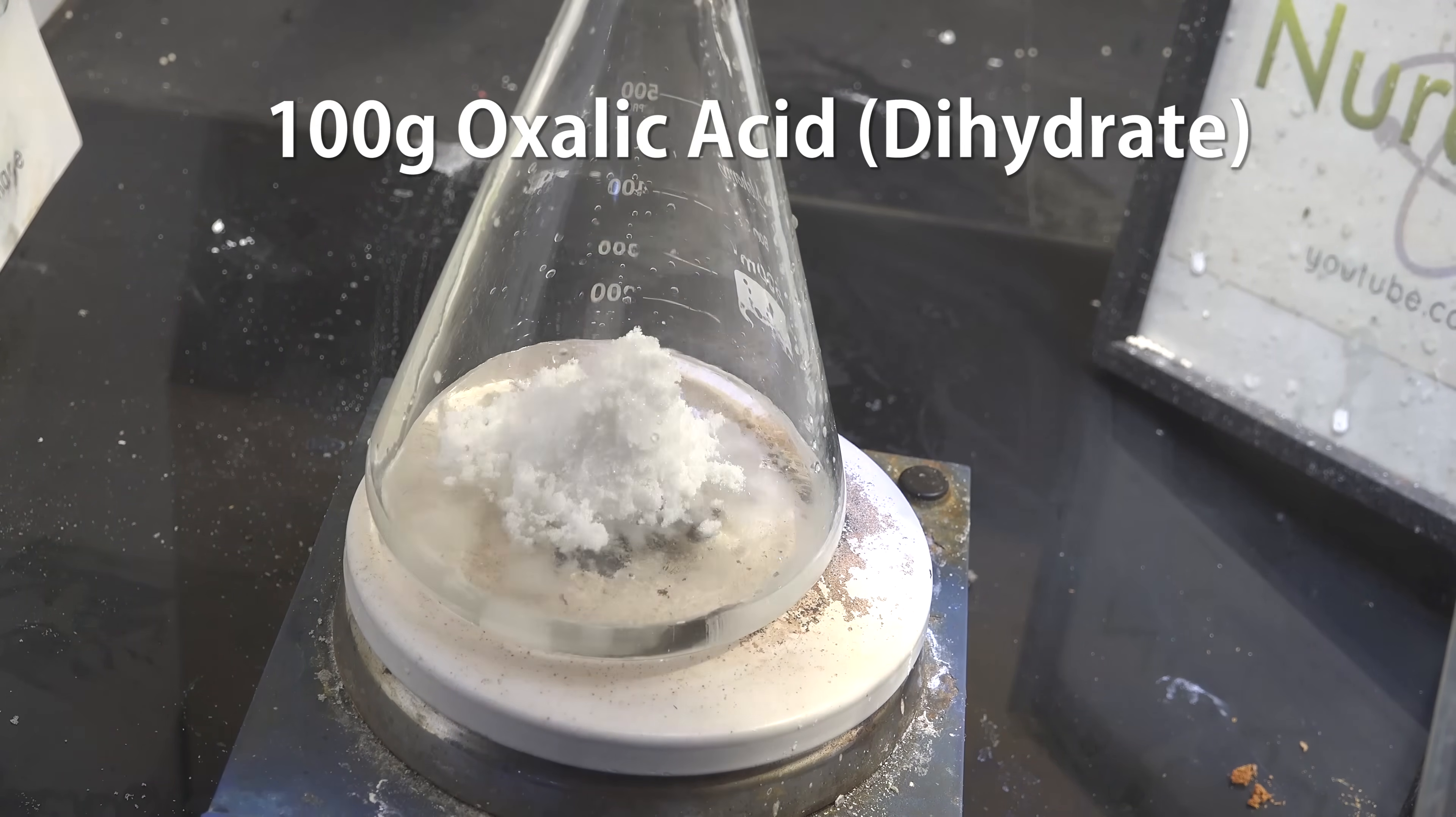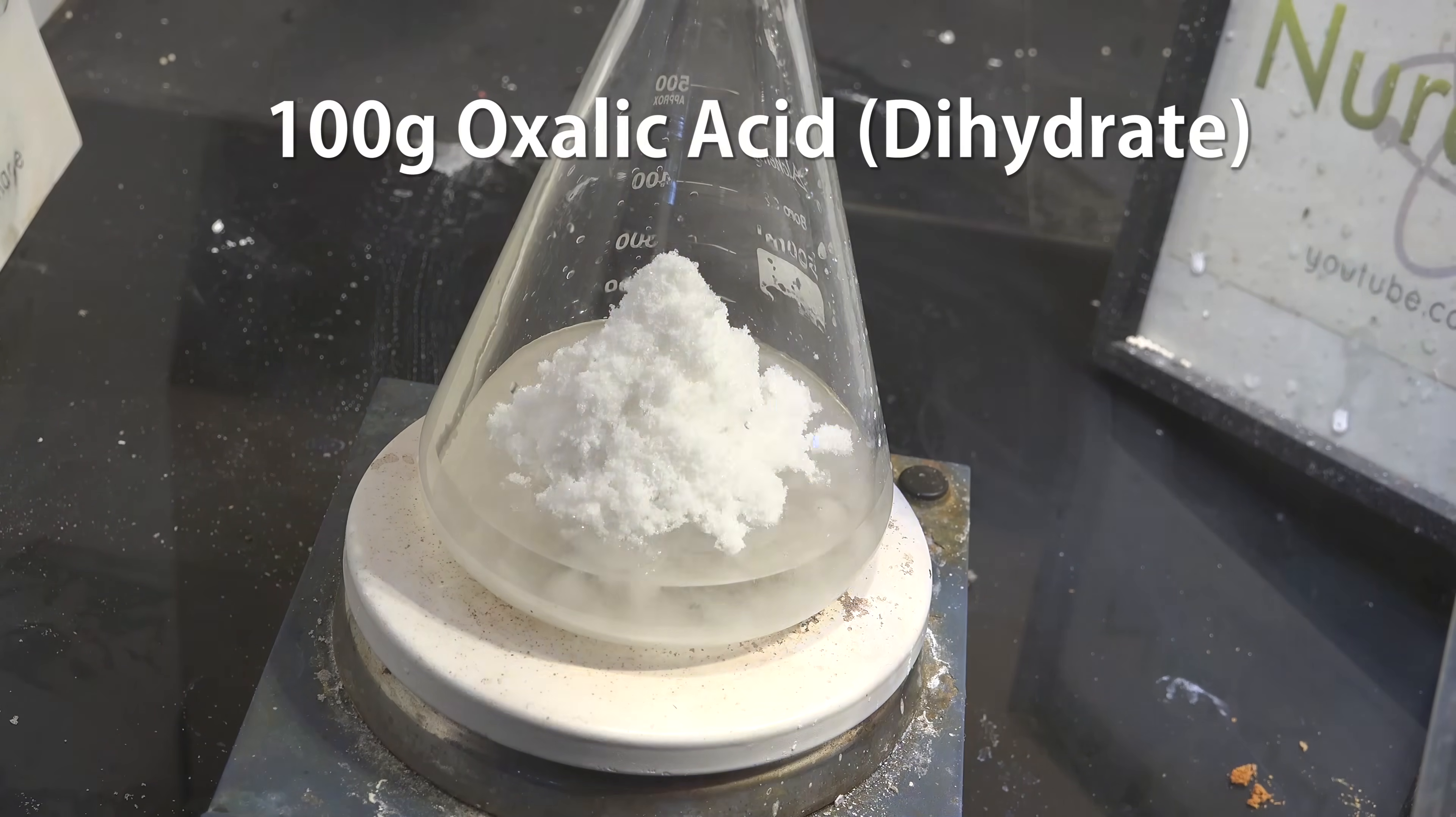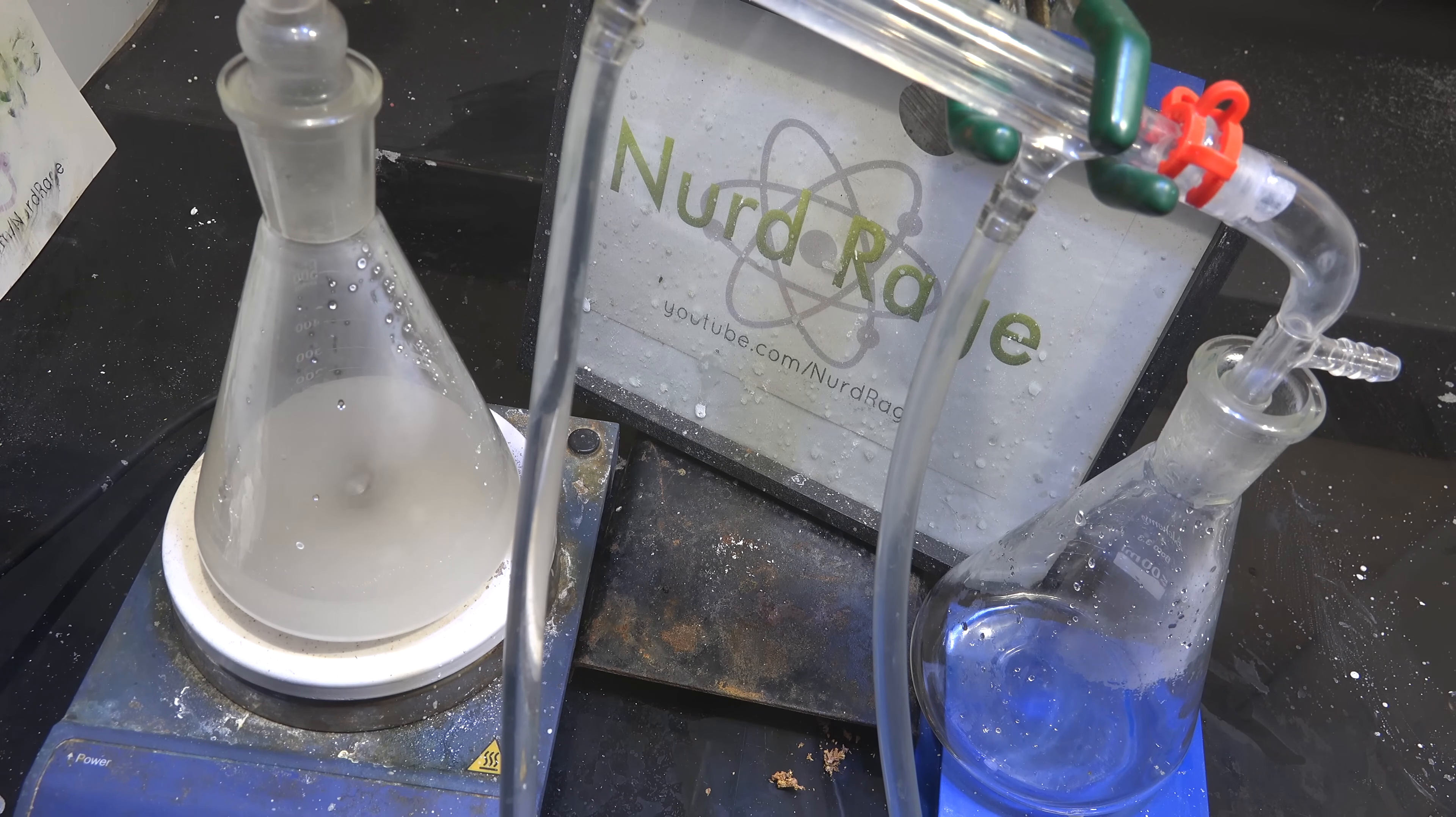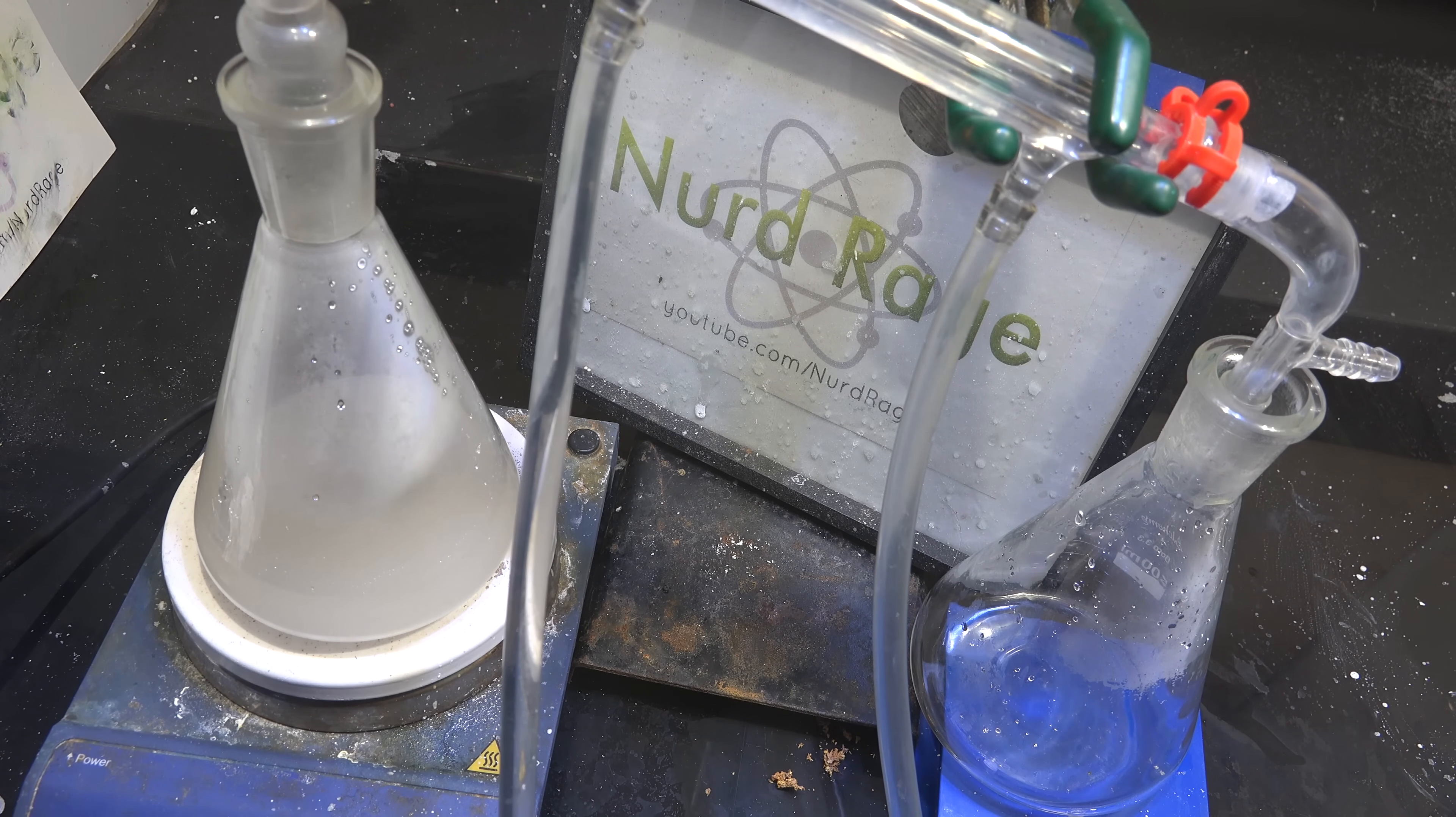Now add 100 g of oxalic acid dihydrate. Set up a distillation apparatus around it and warm up the mixture. Now it's important to keep the temperature of the mixture between 105 and 120 degrees celsius. If it goes too high it will decompose the reactants.